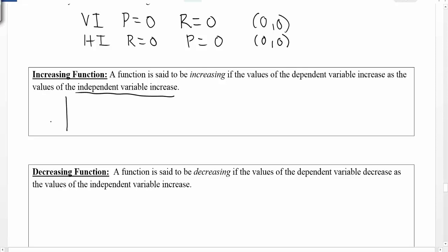Consider a graph — think about what you think an increasing function would look like. We read a graph from left to right, so if we're talking about what happens as the x values go up, we're talking about what happens as we look from left to right. And as we look from left to right, we can see that the y values are going up. So therefore, that function is said to be increasing.